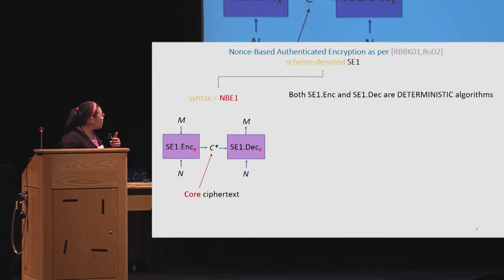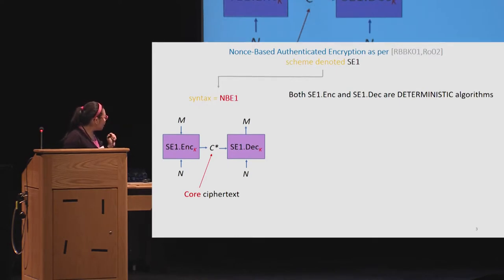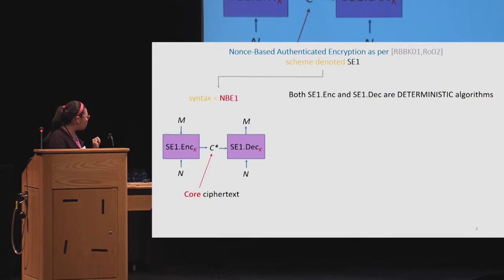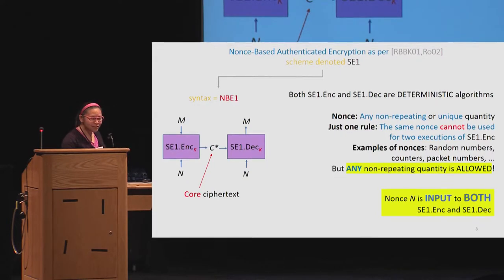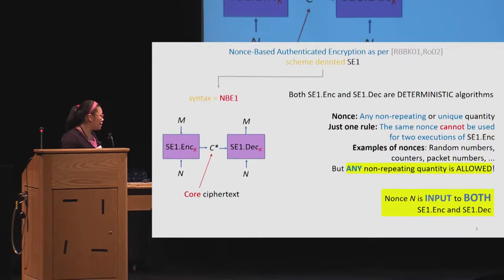Let's go into how NBE1 is defined — this was defined by Rogaway and others. For a scheme SE1, the NBE1 syntax takes a message and produces what we call a core ciphertext, and from this core ciphertext you should be able to retrieve the message. The special input we have here is what we call a nonce — a number used once, meaning any non-repeating quantity. In the real world, the most common nonces are random numbers and counters, but people also use sector numbers, packet numbers, and device identifiers as nonces, so long as they are non-repeating.